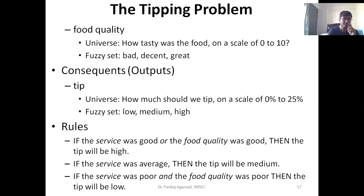Now comes the rule part — that is the intelligence part. We can have rules like: if the service was the input, and the service was good, or the food quality was good — there are two inputs: service and food quality. If service is very good and food quality is very good, then what decision has to be taken? Then we take the decision that the tip is going to be high.